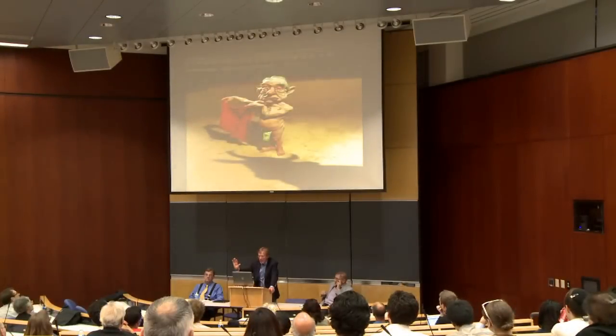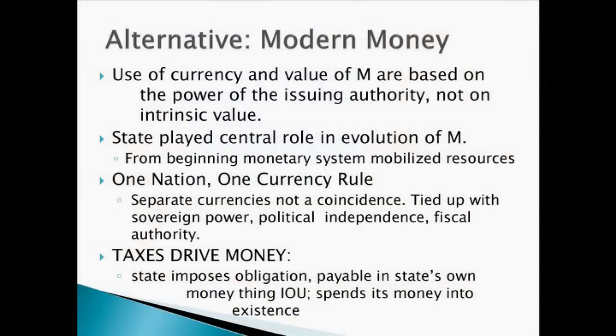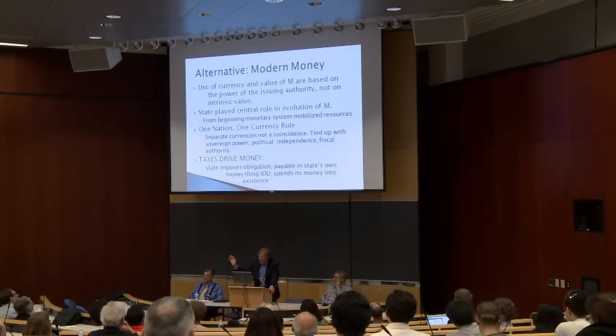In Europe, there are no legal tender laws. So what backs these things up? Even more sophisticated students would say 'fiat' — the government just says it's worth a dollar. That gets a little closer to the truth, but it sounds like there's nothing backing up the currency. The alternative, modern money view: use of the currency and value of money are based on the power of the issuing authority, not on intrinsic value. Most of our money things are just electronic entries on balance sheets, even in the case of the government.